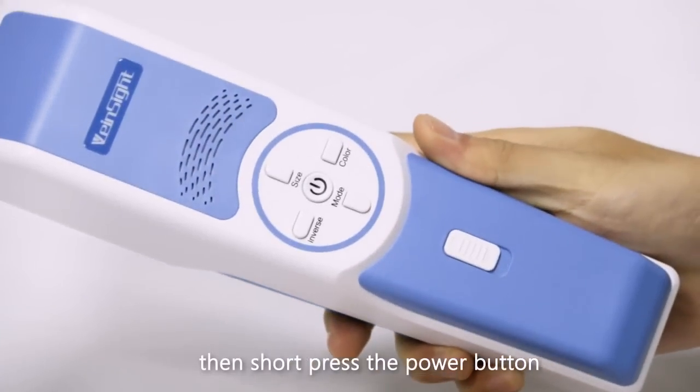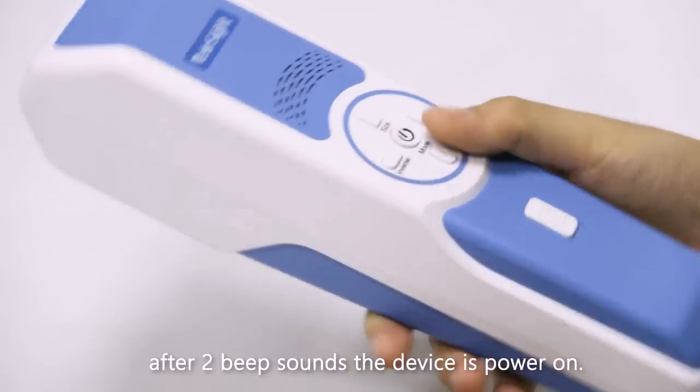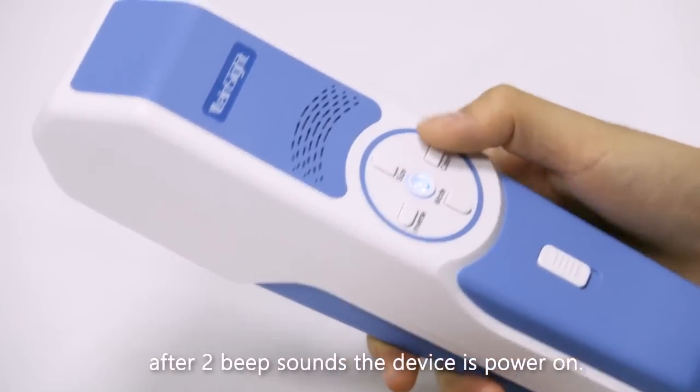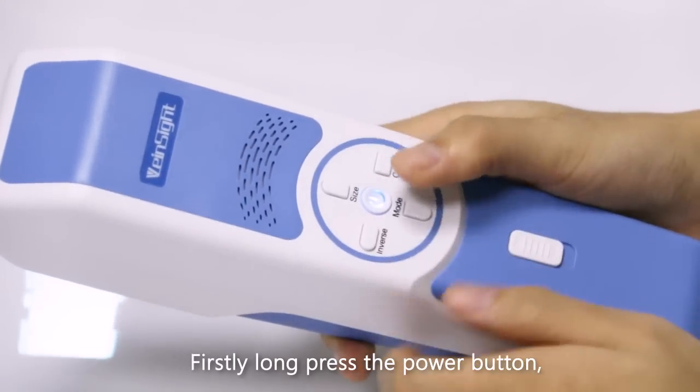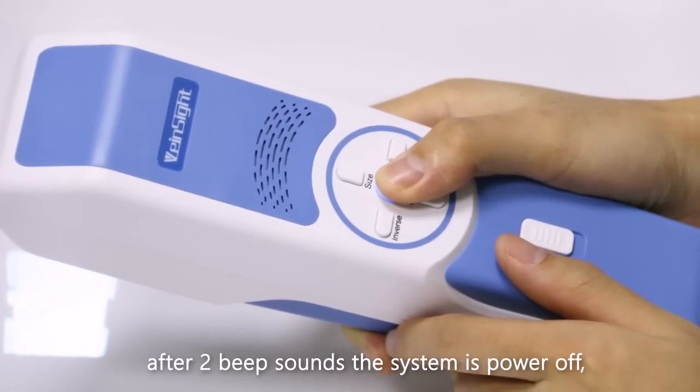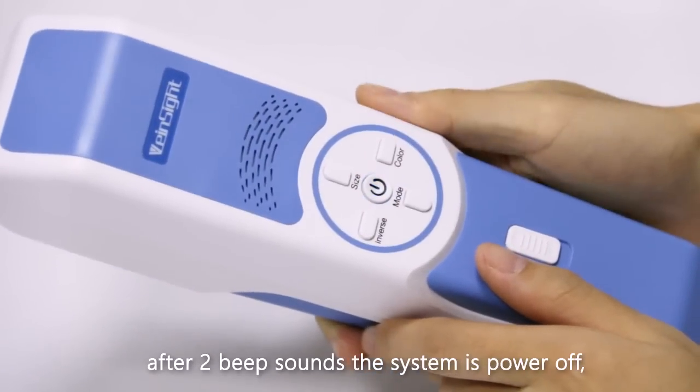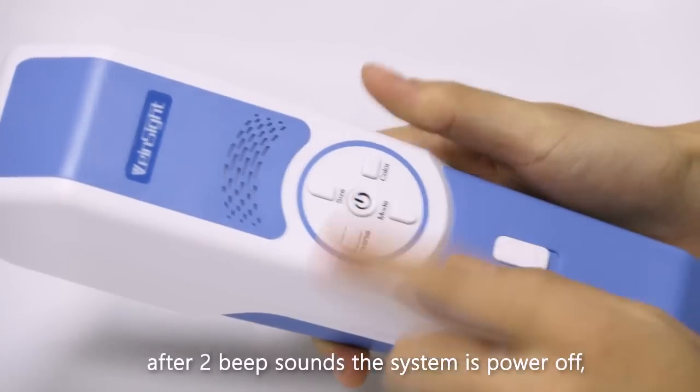How to power on VS 400: First, turn on the main switch, then short press the power button. After two beep sounds, the device is powered on. To power off, long press the power button. After two beep sounds, the system powers off, then turn down the main switch to completely power off the imaging unit.